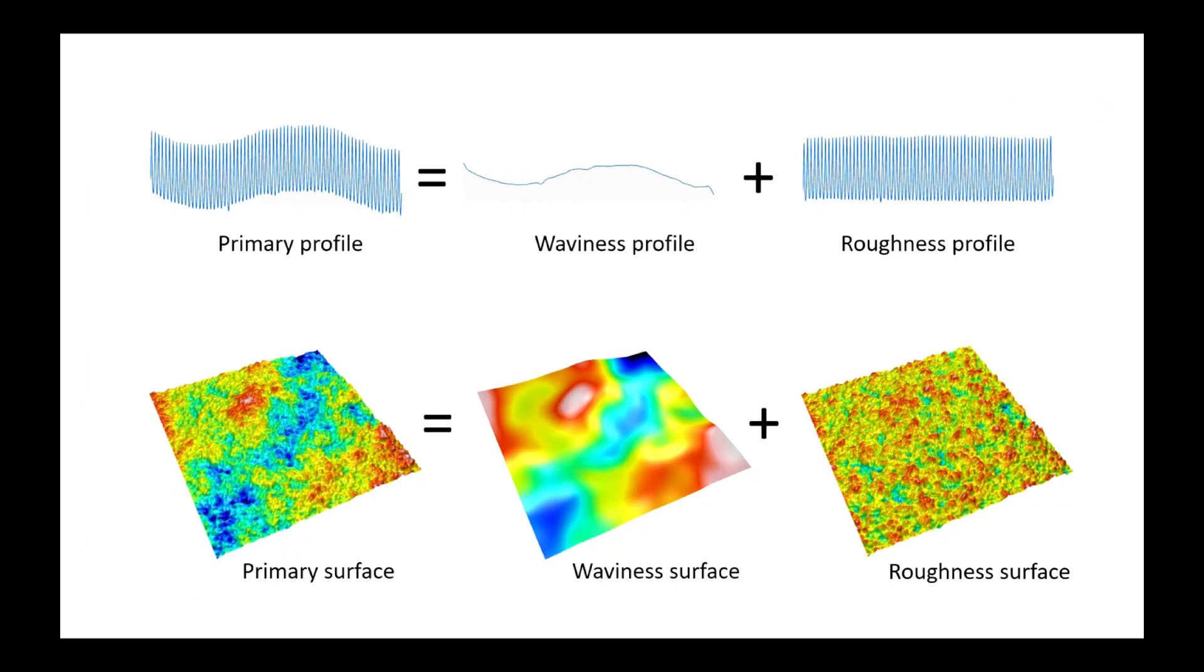Once the right cutoff has been chosen, there will be a correct decomposition of the primary surface into waviness plus roughness. Some surface functions can be controlled using roughness parameters, for example, lubrication or friction. Other functions will be controlled using waviness parameters, for example, sealing.